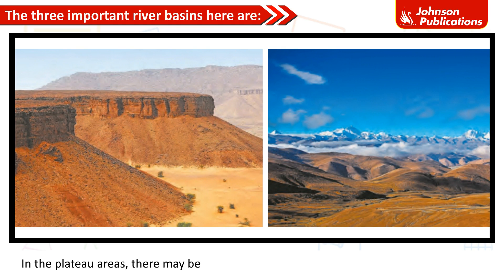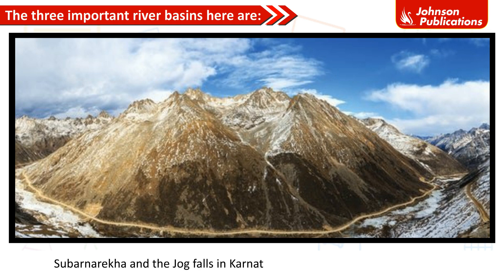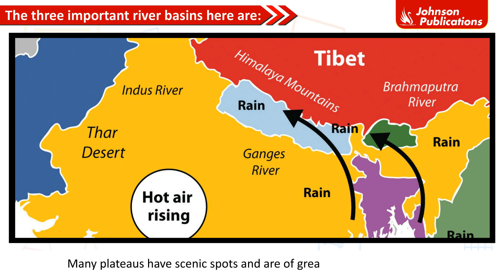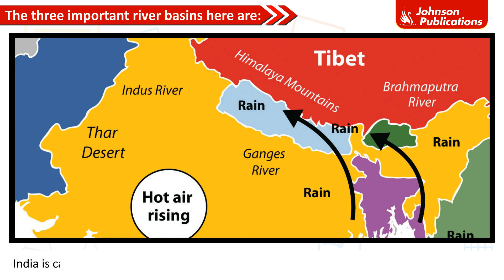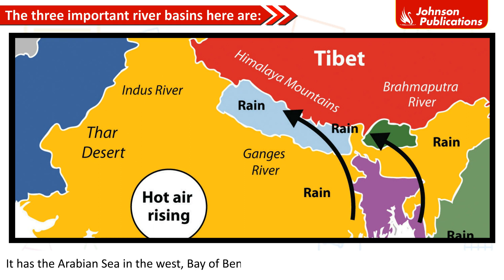In plateau areas, rivers falling from great heights create waterfalls. Examples in India include the Hundru Falls in the Chhota Nagpur Plateau on the river Subarnarekha, and the Jog Falls in Karnataka. Lava plateaus are rich in black soil that is fertile and good for cultivation. Plateaus are called the storehouse of minerals. India is called a peninsula because it is surrounded by three large water bodies — the Arabian Sea in the west, the Bay of Bengal in the east, and the Indian Ocean in the south.